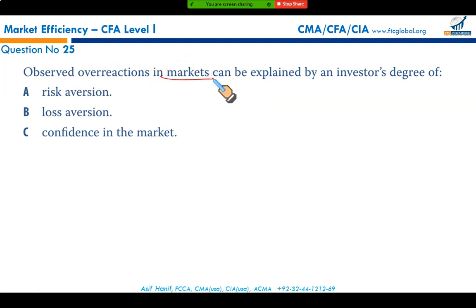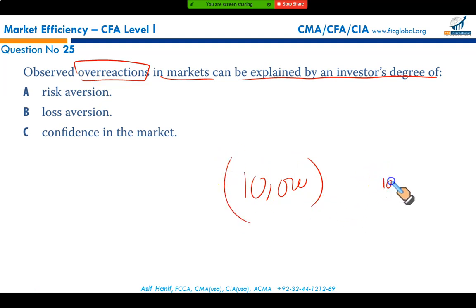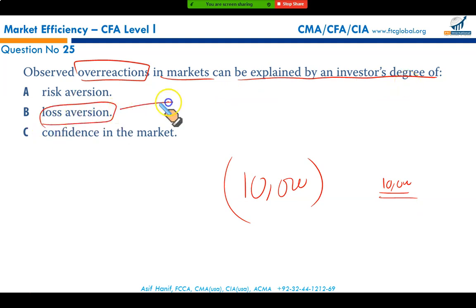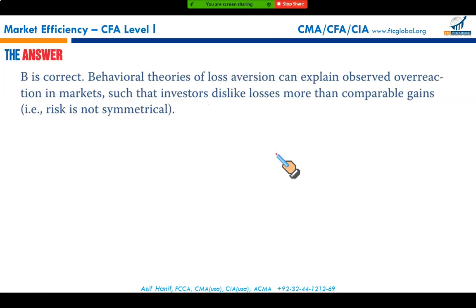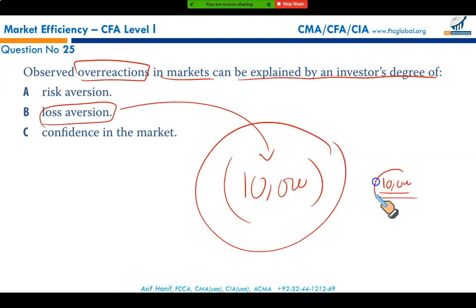Observed overreaction in markets can be explained by an investor's degree of loss aversion. For certain investors, the disutility of loss is greater than the utility of gain, causing overreaction — which is itself a market anomaly. This loss aversion is asymmetrical: the hatred of loss is greater than the love of gains, making option B the correct answer.